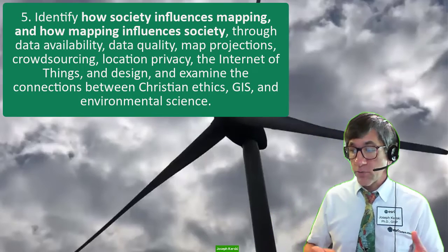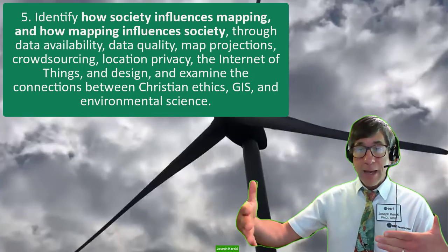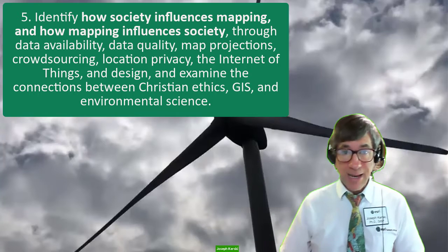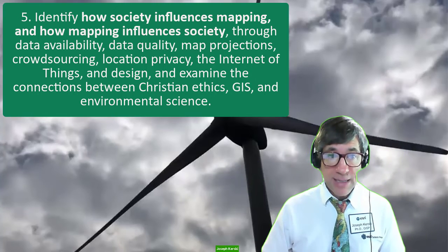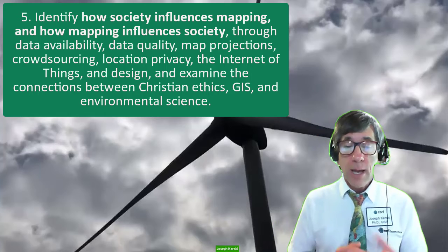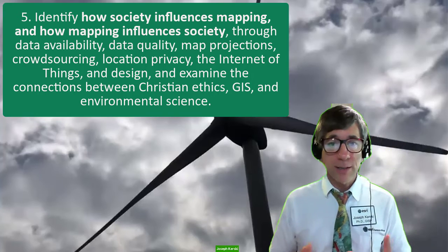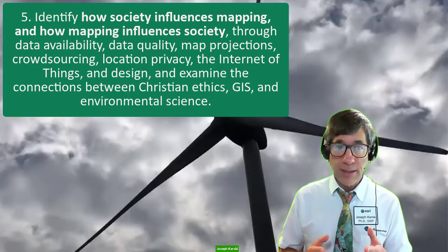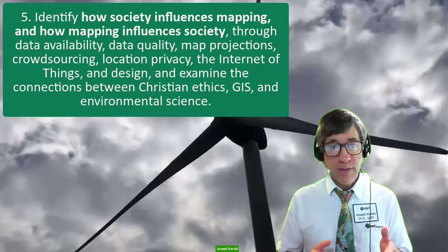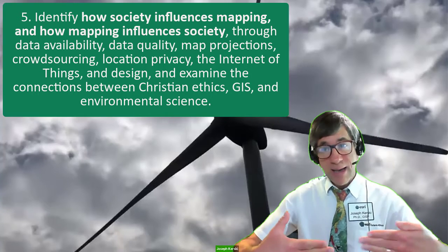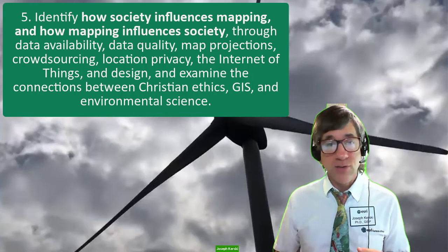Number five, identify how society influences mapping and how mapping influences society, through data availability, data quality issues, map projections, crowdsourcing, location privacy, the Internet of Things, and design. And examine the connections between Christian ethics, GIS, and environmental science.